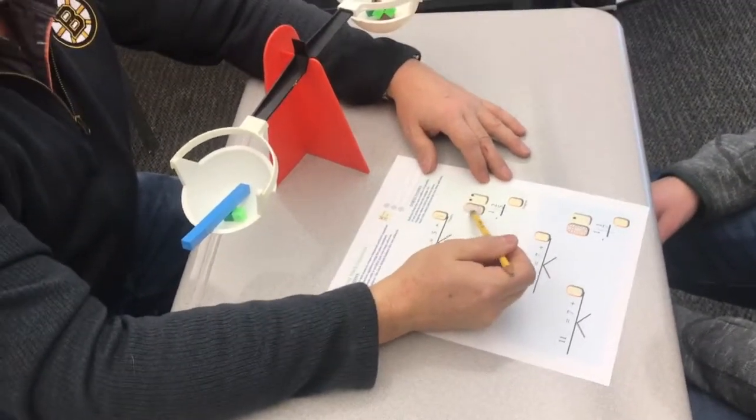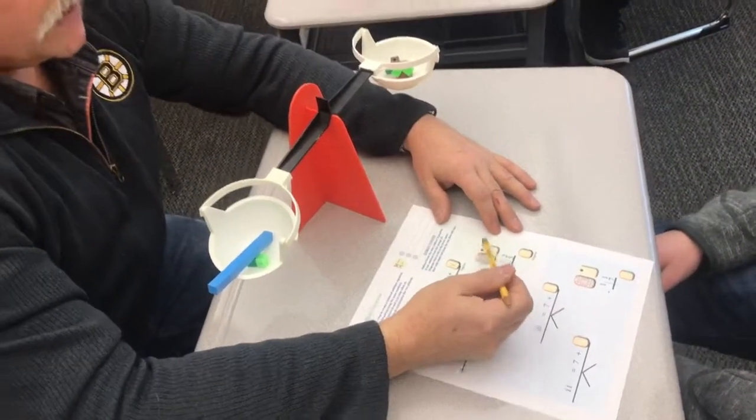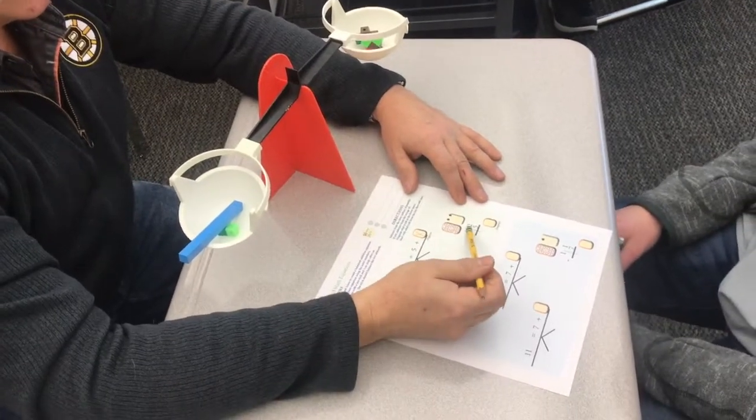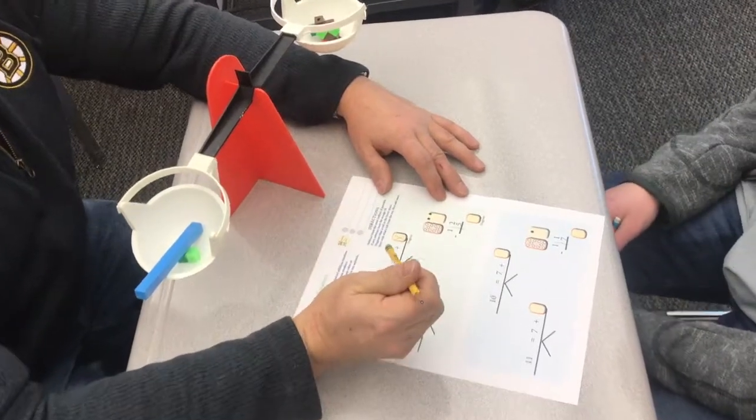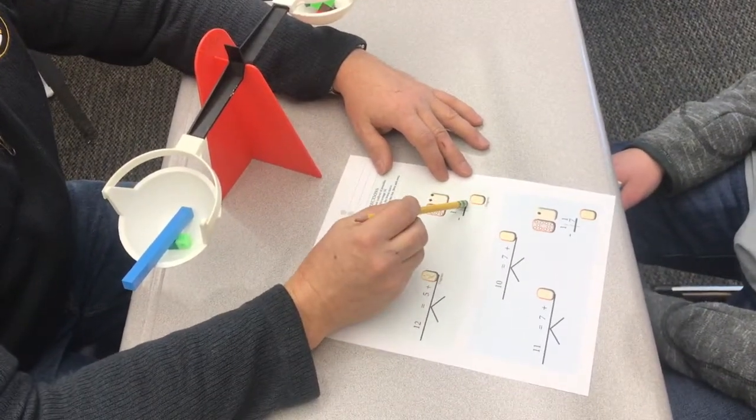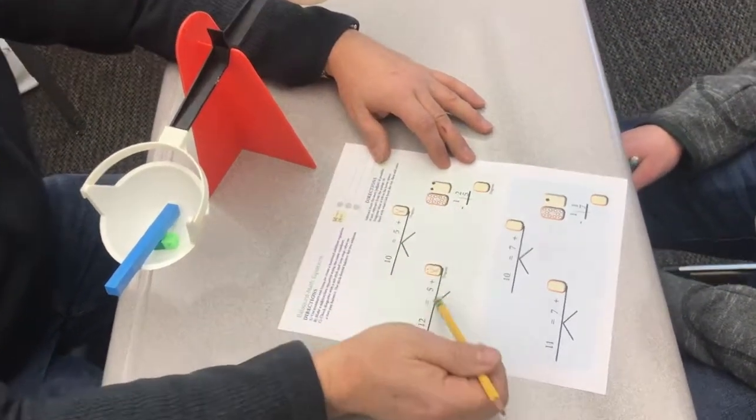So, how much is here? 10. Mm-hmm. And how much more? 2. That's worth 10, and 2 more. What's this number called? 12. Good. We're going to figure out how far 5 is away from 12, just like we did here.